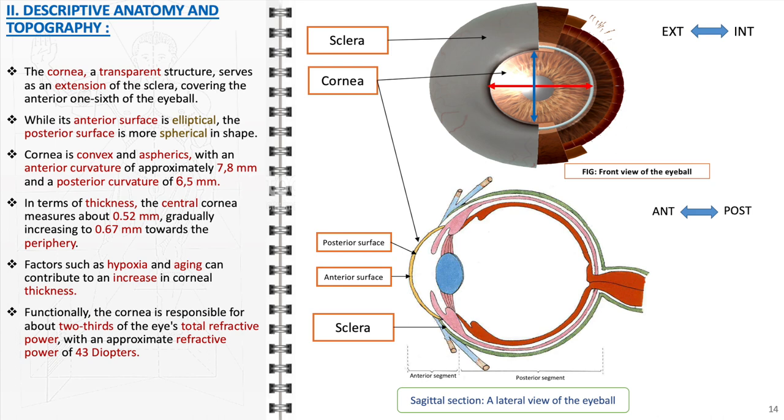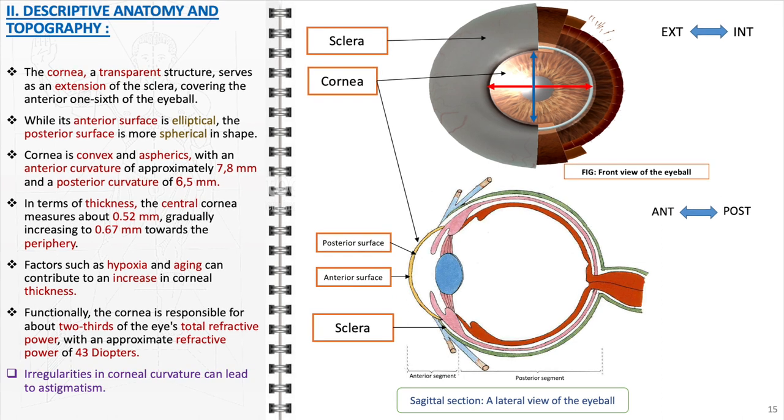Functionally, the cornea is a powerhouse in terms of refractive power, contributing about two-thirds of the eye's total. With a refractive power of roughly 43 diopters, it plays a significant role in focusing visual images onto the retina. Clinically, it's crucial to note that any irregularities in the corneal curvature can lead to astigmatism. This condition, characterized by an uneven curvature, leads to distorted or blurred vision, as the eye cannot focus light rays evenly onto the retina.